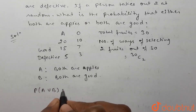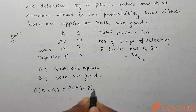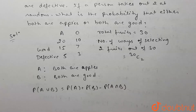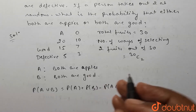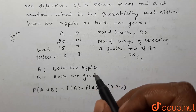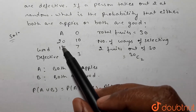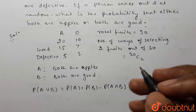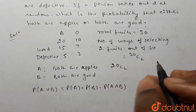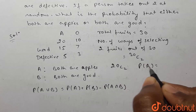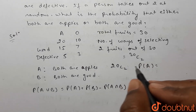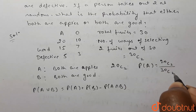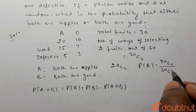Probability of A union B equals probability of A plus probability of B minus probability of A intersection B. A is both are apples, and total number of apples are 20. We have to select two apples out of 20 apples, so probability of A will be 20C2 divided by 30C2.